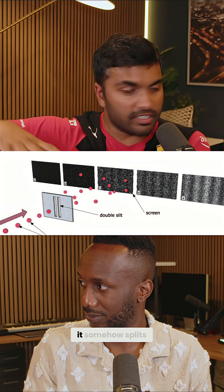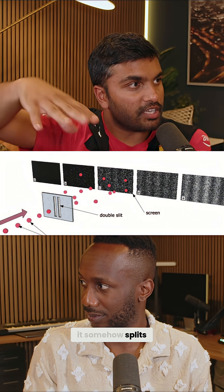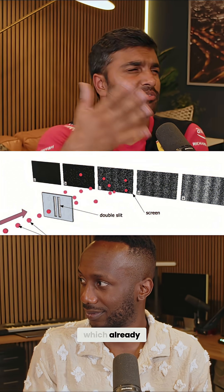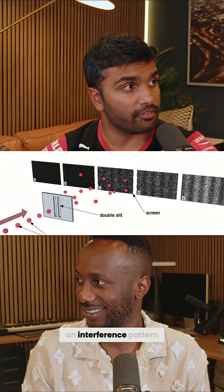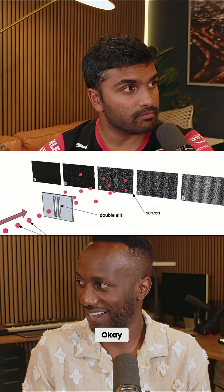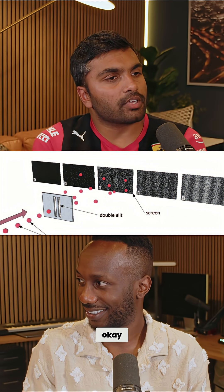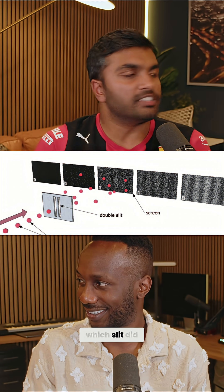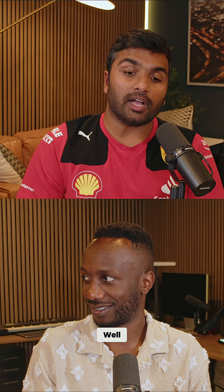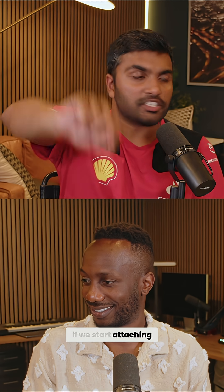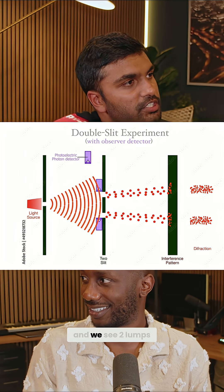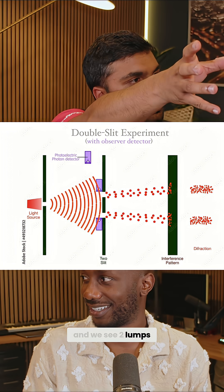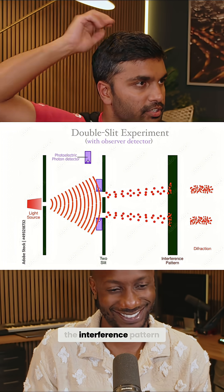Even if you do a single photon, it somehow splits and interferes with itself — which already you're like, what? And it's creating an interference pattern. The next obvious question is: which slit did it go through? Well, if we start attaching detectors on the slits, then it becomes a particle again and we see two lumps. We don't see the interference pattern.